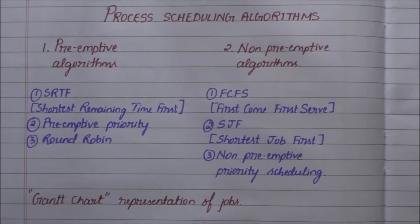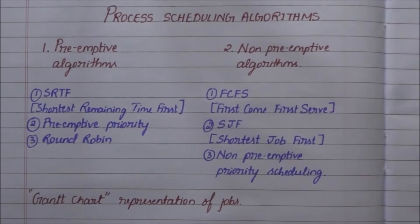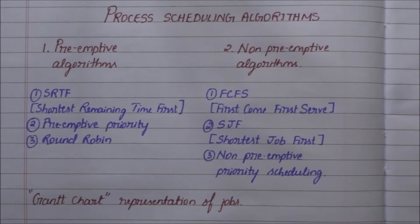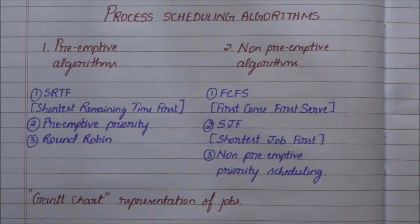Process scheduling algorithms. There are two kinds of process scheduling algorithms: the first one is preemptive algorithm and the second is non-preemptive algorithm.